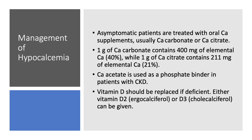If the patient is asymptomatic and hypocalcemia is mild, you can treat with oral calcium salts — calcium carbonate or calcium citrate. The preferred salt is calcium carbonate because one gram contains 400 mg of elemental calcium, so 40% of its weight. Calcium citrate may be better tolerated but has lower calcium content — about 21% of its weight is elemental calcium. Calcium acetate is not used as replacement; we use it as nephrologists as a phosphate binder in patients with CKD.